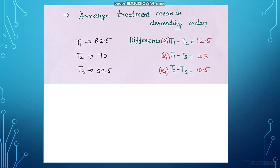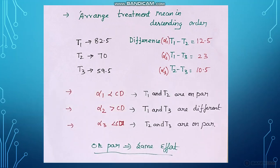After that, we compare alpha 1, alpha 2, and alpha 3 with the CD value — that is, we compare the difference of treatment means with the CD value. If alpha 1 is greater than CD, then T1 and T2 are different, and T1 and T3 are different. But if alpha 3 is less than CD value, then T2 and T3 are on par, meaning they have the same effect.